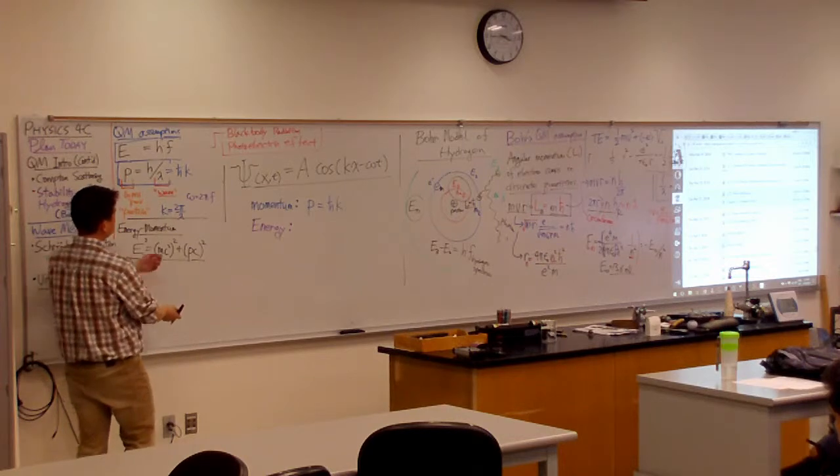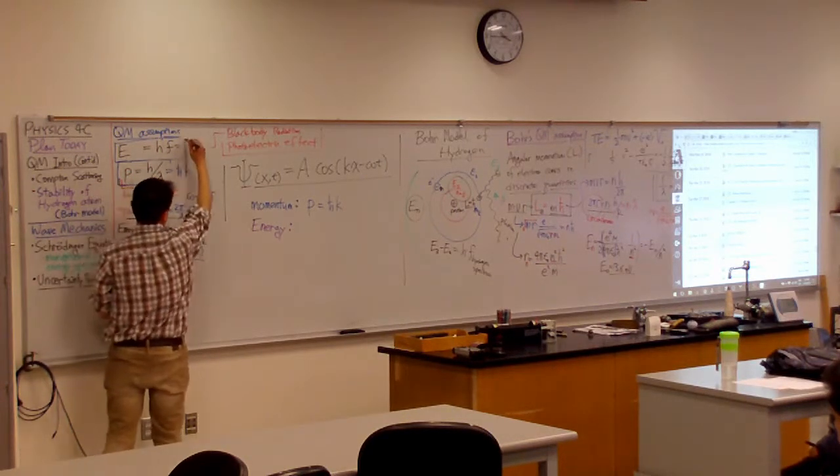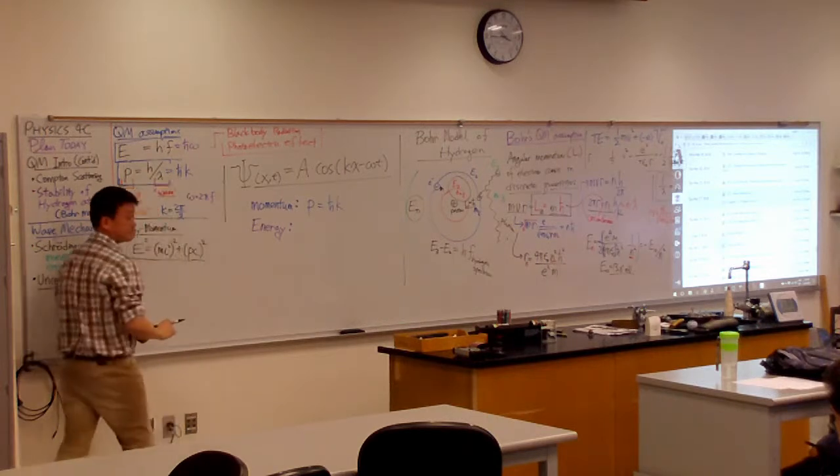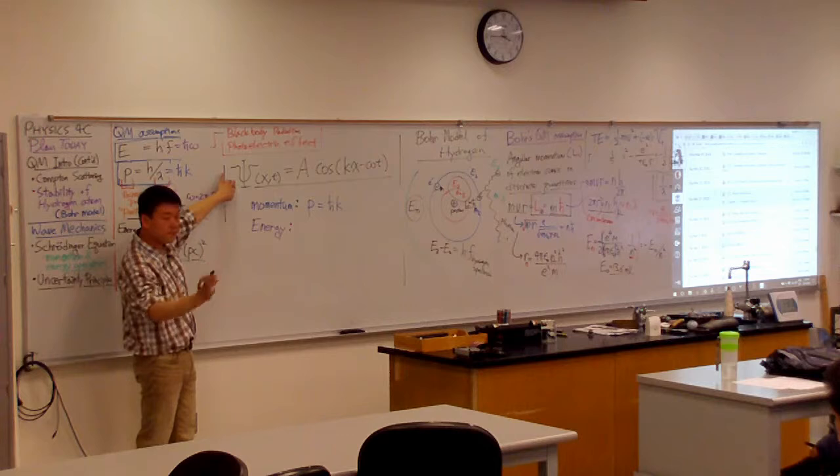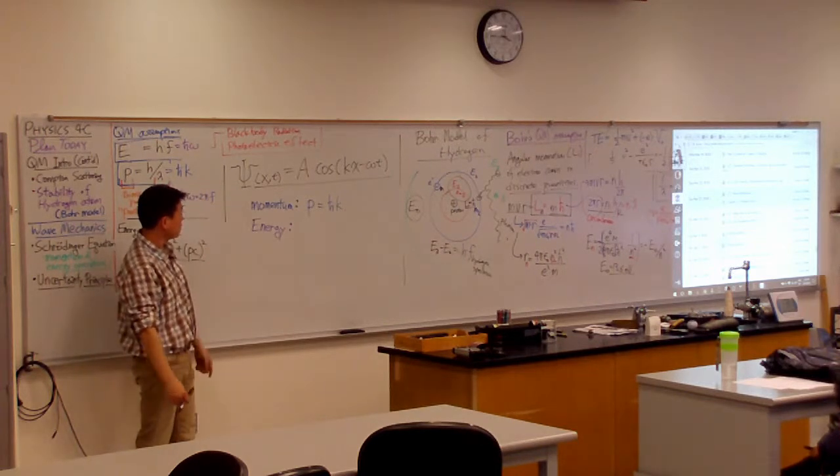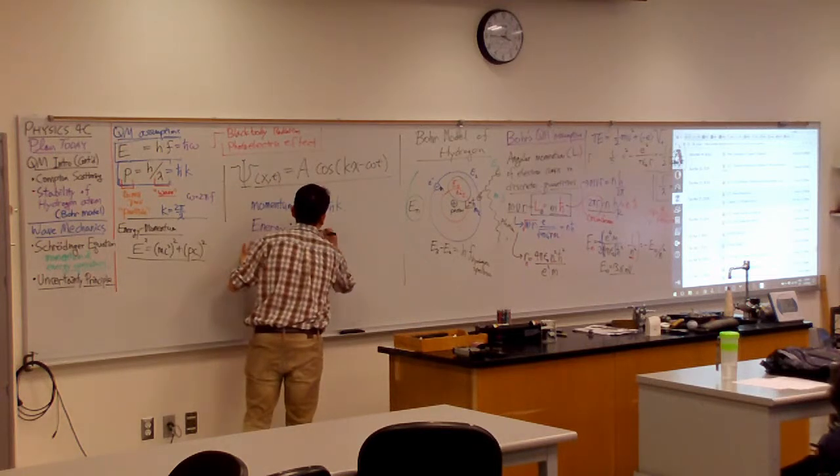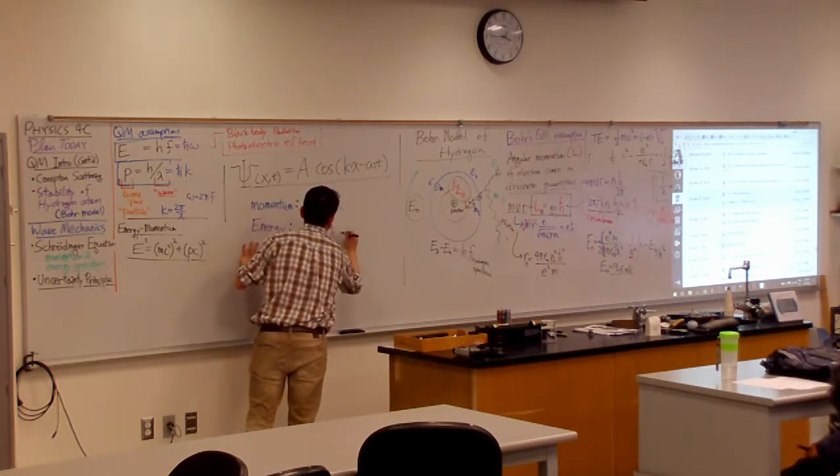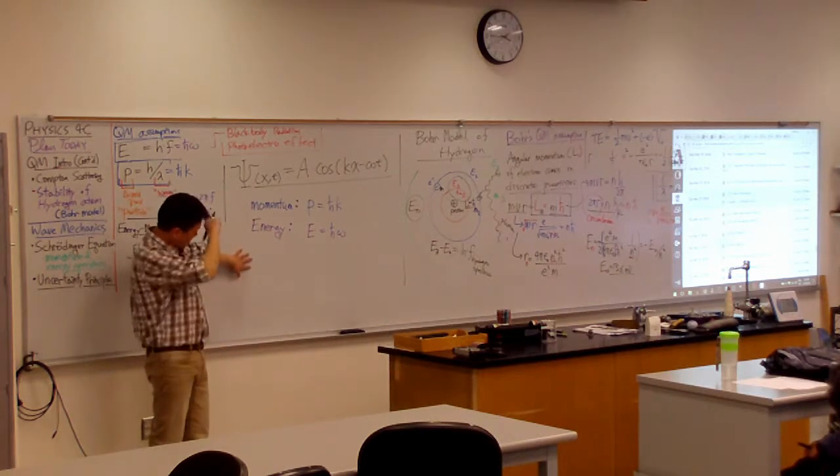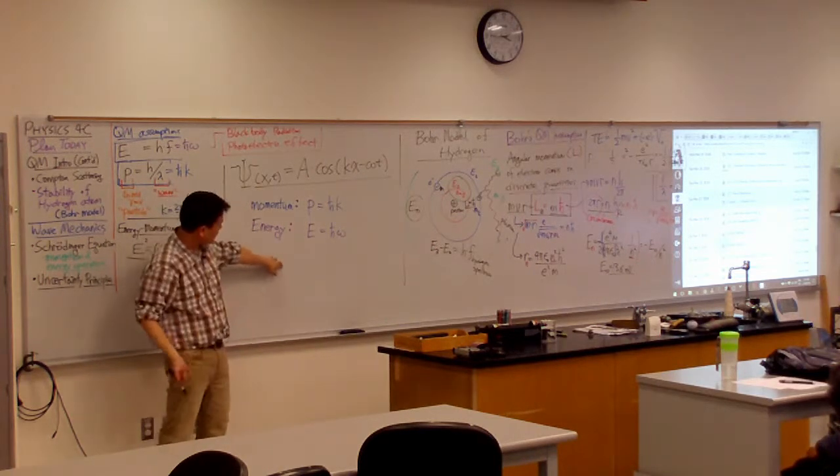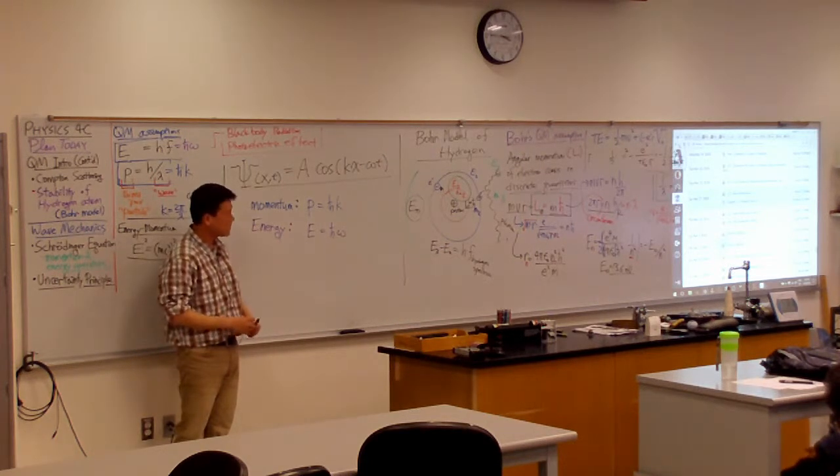So, here, it's h over 2 pi times omega. Or, h bar omega. So, if you have this as the wave function of whatever particle you are looking at, you could say its energy is equal to h bar omega. And, right now, it's going to be a little bit unclear what we mean by this energy. You know, let's just leave it that way for now.